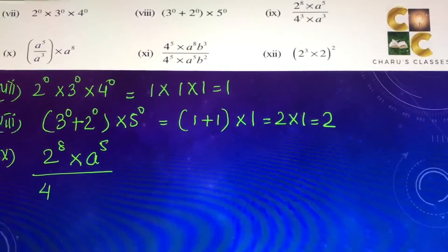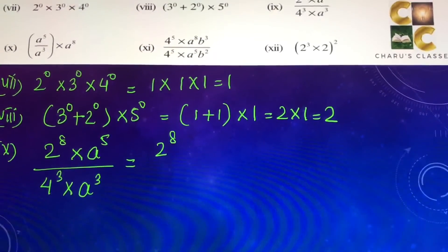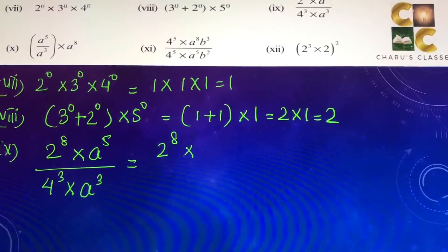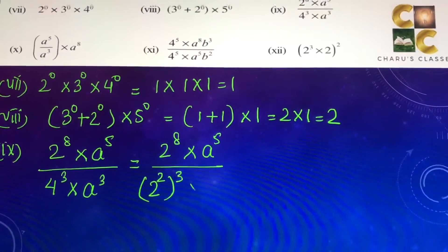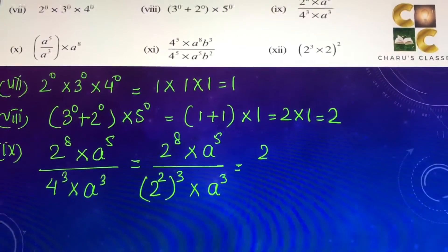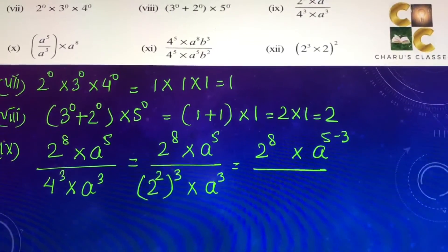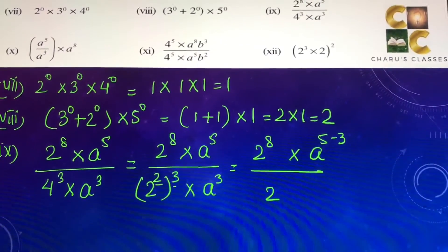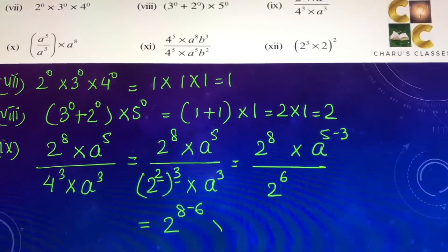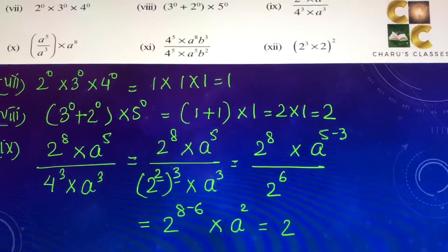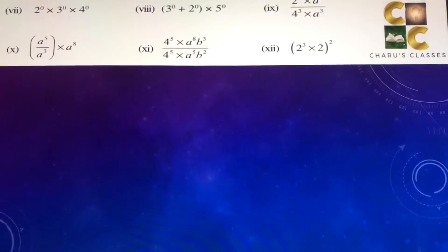Ninth part: 4 can be written as 2 to the power 2. So we write 2 to the power 2, whole to the power 3, into a to the power 3, divided by 2 to the power 8 into a to the power 5 minus 3. The powers 2 and 3 get multiplied to give 2 to the power 6. This becomes 2 to the power 8 minus 6 into a to the power 2, or 2 to the power 2 into a to the power 2.